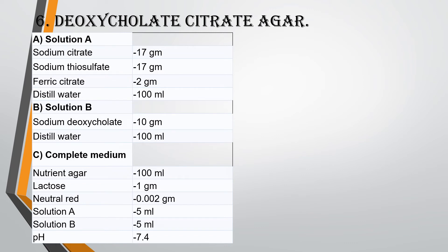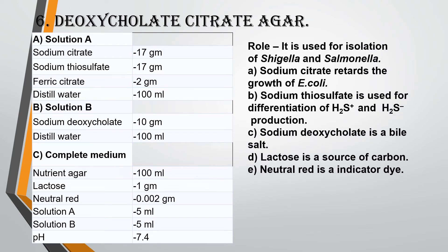Deoxycholate Citrate Agar is used for isolation of Shigella and Salmonella. Sodium Citrate retards the growth of E. coli, inhibiting it when isolating these bacteria. Sodium Thiosulfate is used for differentiation of H2S-positive and H2S-negative production. Sodium Deoxycholate is a bile salt. Lactose is a source of carbon, and Neutral Red is an indicator dye.